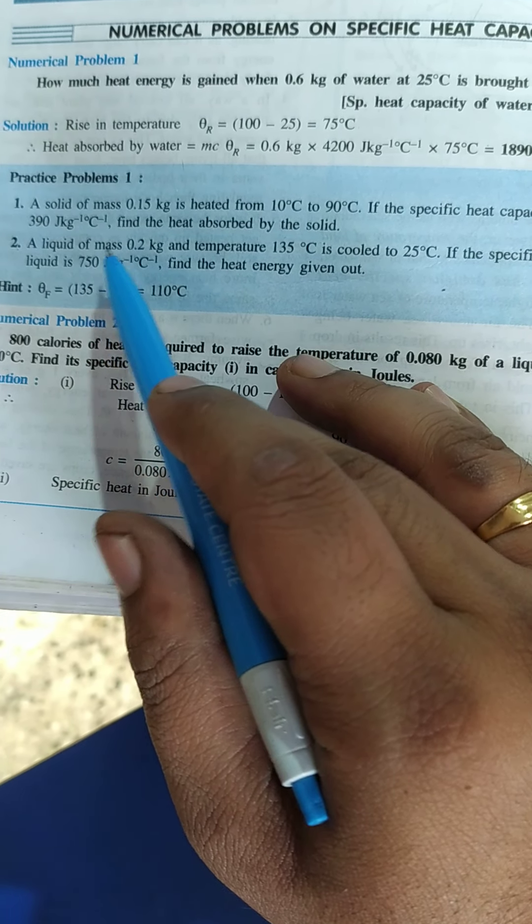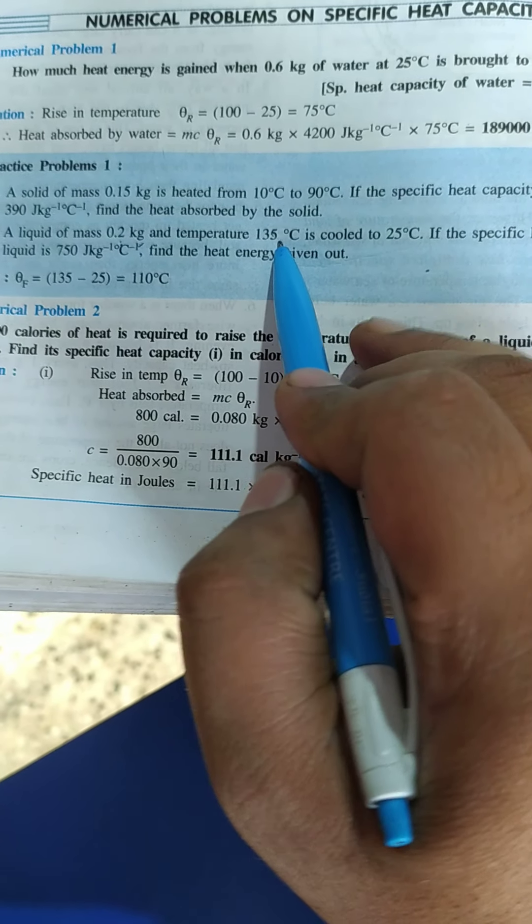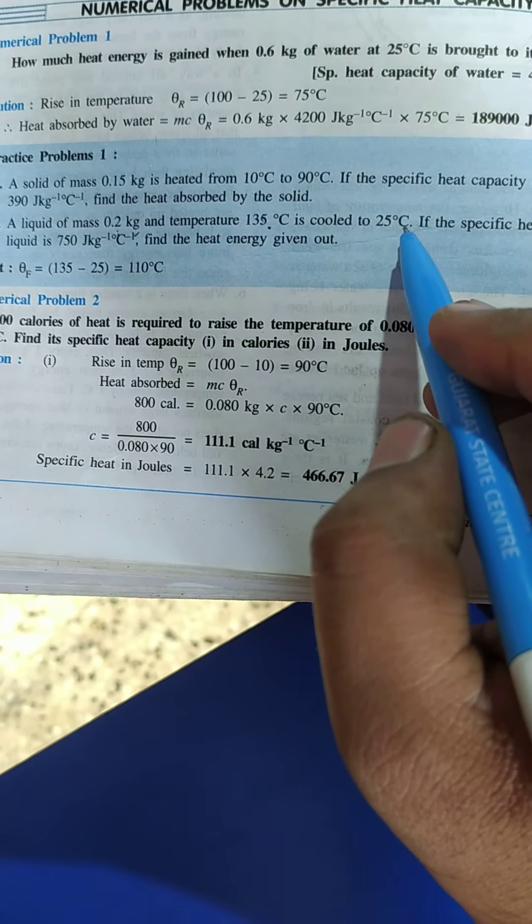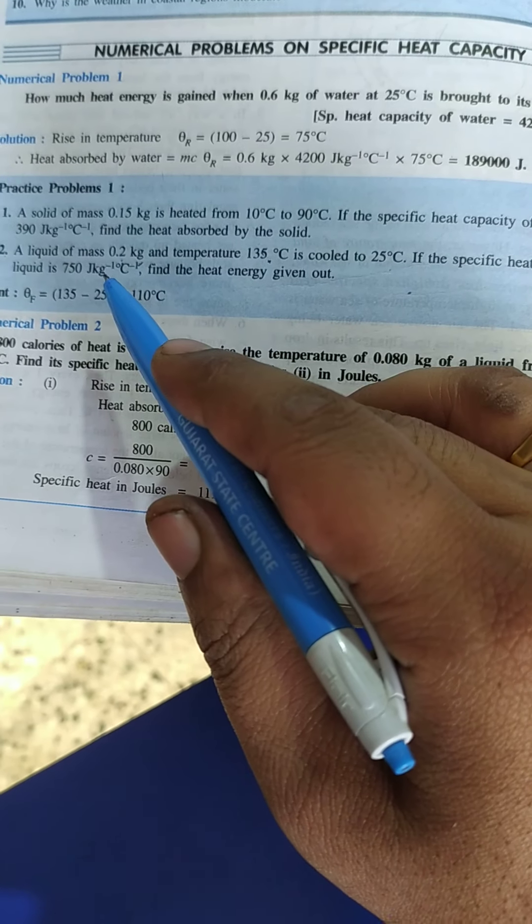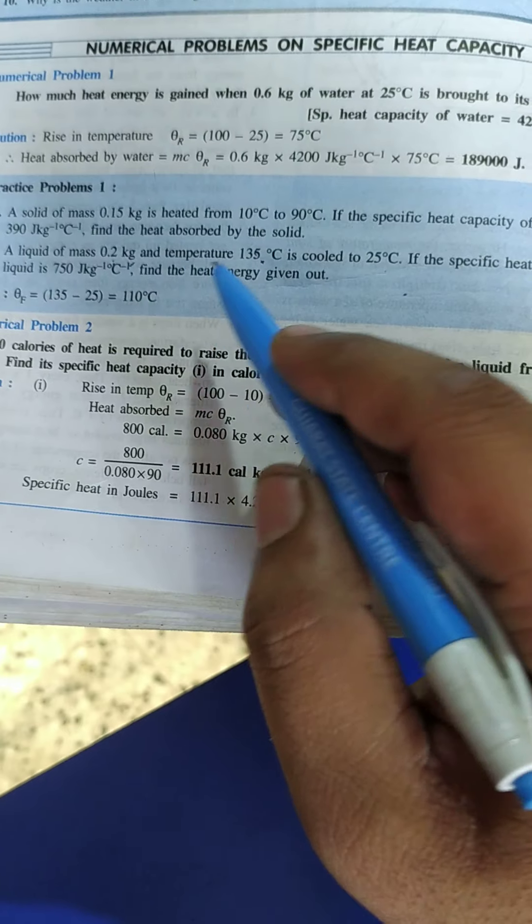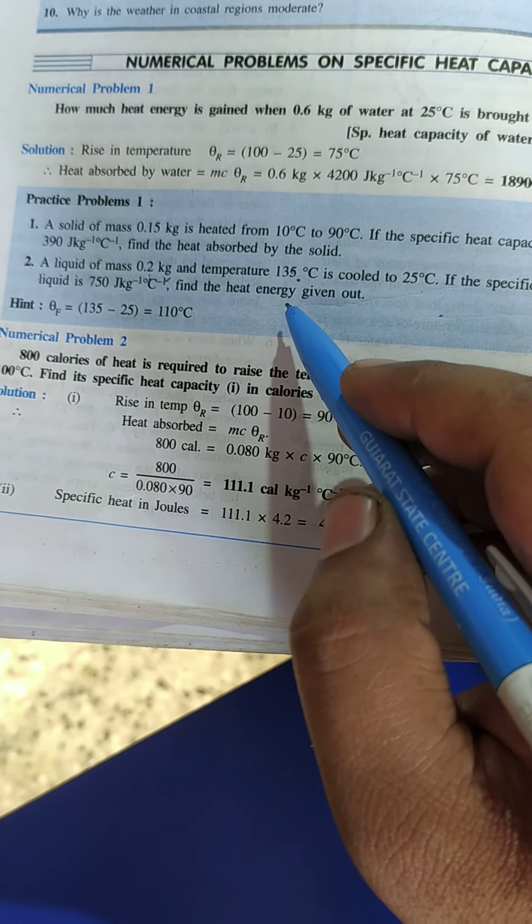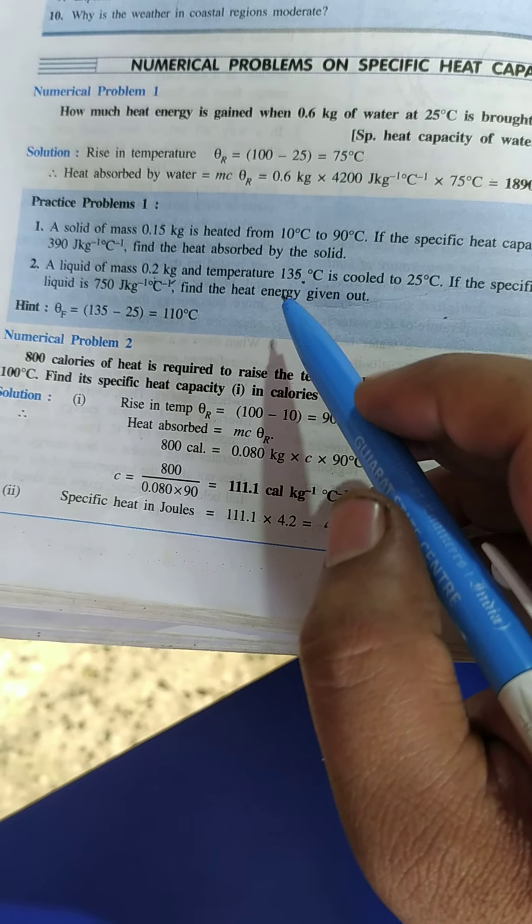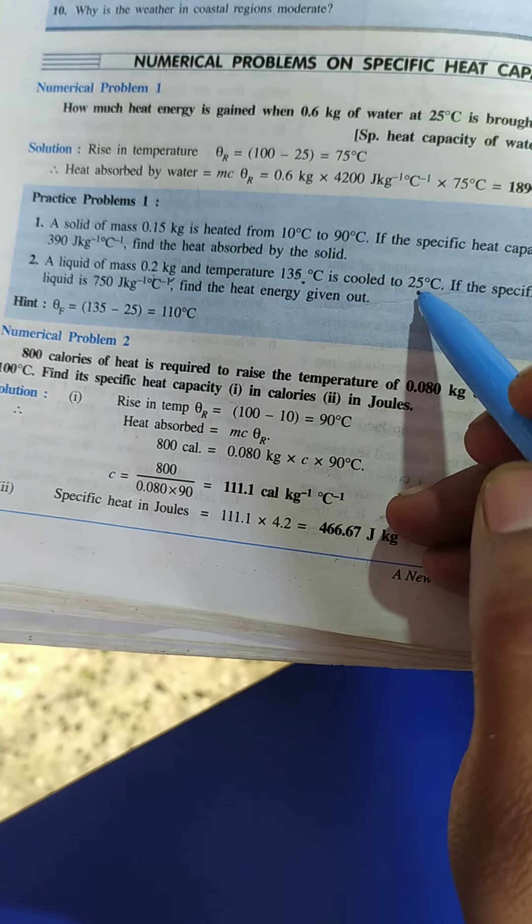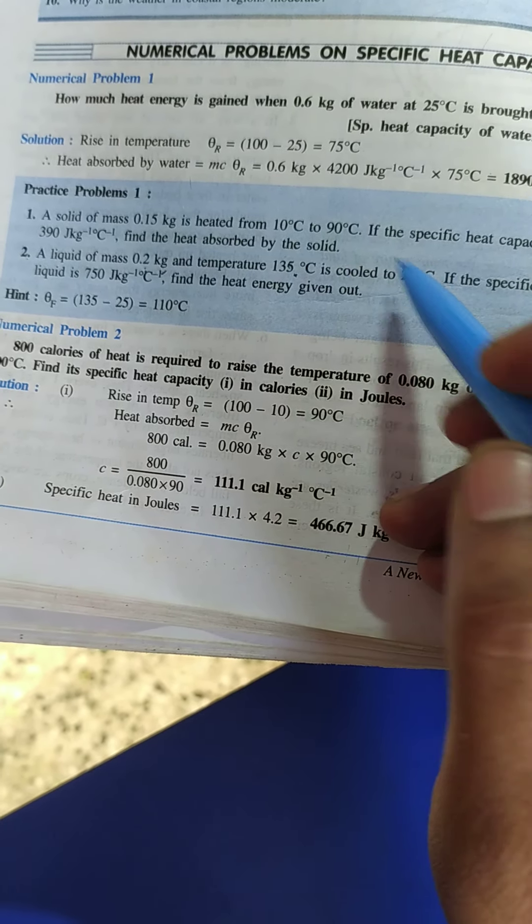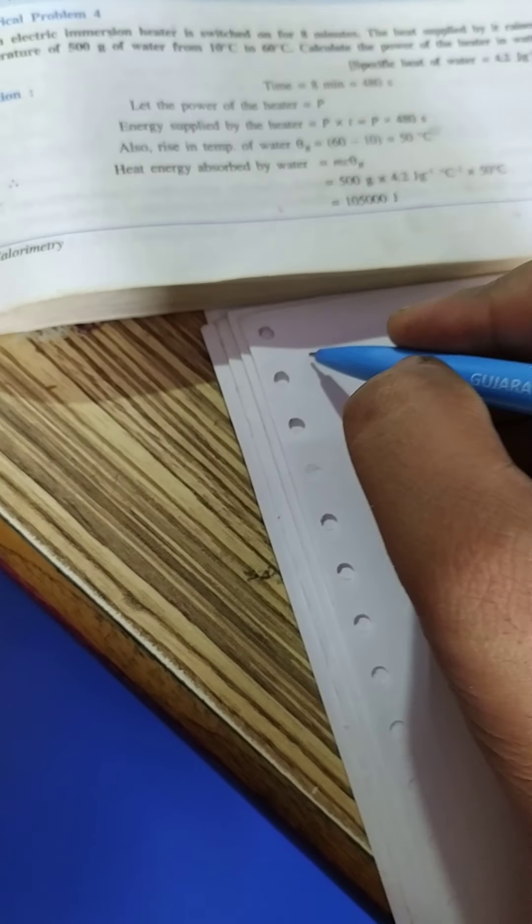In the second question it is said that a liquid of mass 0.2 kg having initial temperature 135 degree centigrade is cooled to 25 degree centigrade. If the specific capacity of the substance is 750 joules per kg degree centigrade, find heat energy given out. So when 0.2 kg of substance temperature decreases from 135 to 25, whatever amount of the heat energy is released, that we have to calculate.